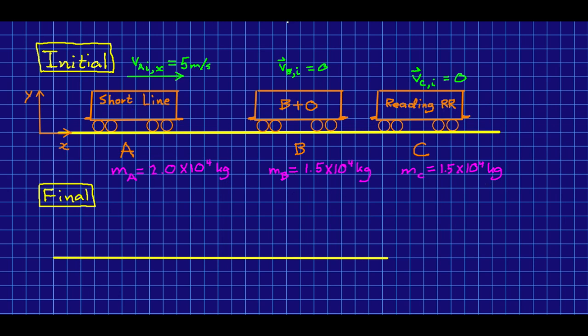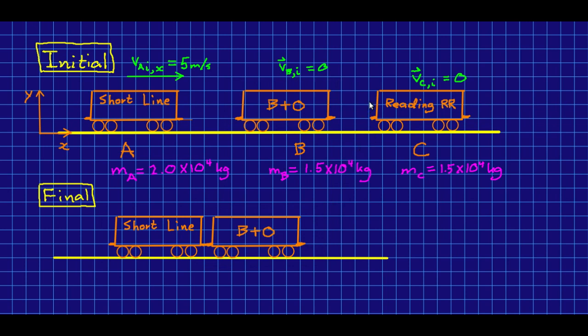What we want to know is this car is going to come along and it's going to couple with B. And then they're going to roll along together and they're going to couple with C. And after they're done all of that, what is the velocity of the combined group of cars? So there will be some V final X for the whole group of cars.